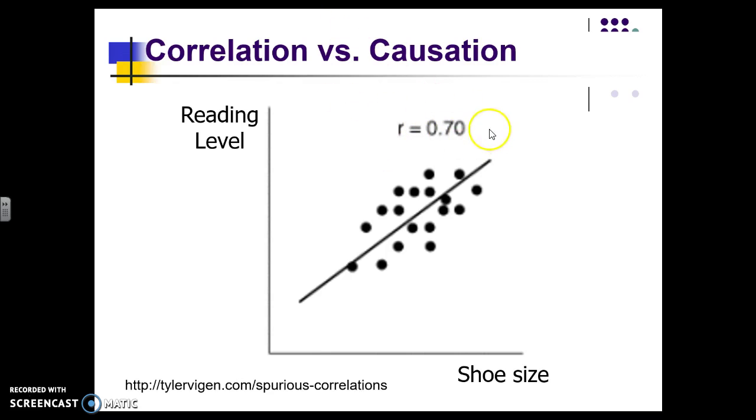So we know that that is a strong positive relationship between your reading level and your shoe size. That means that they are highly related. There is something happening between those two. And if I go into regression, then I could predict your reading level based on your shoe size.